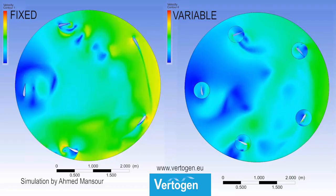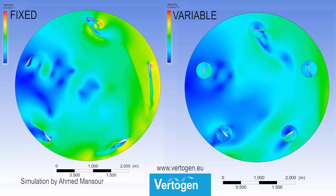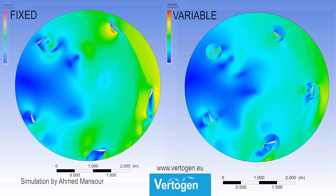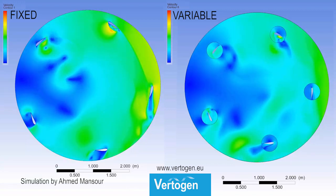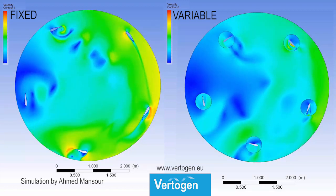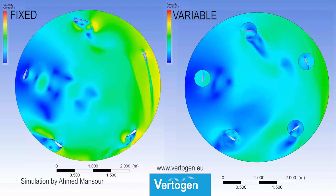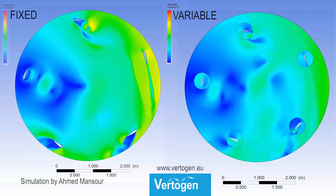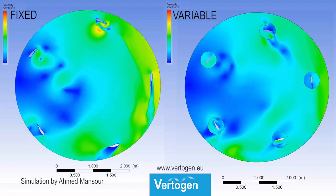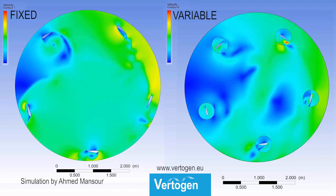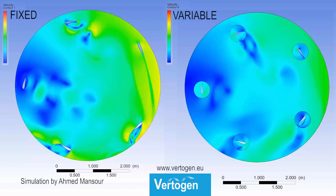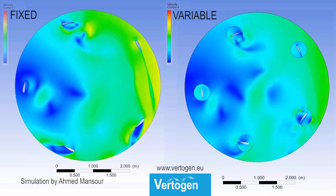The fixed blade system on the left is less efficient, as lift is created by only one or two blades meeting the wind flow at the better angle, while the remaining blades generate braking turbulence by meeting the air at a worse angle. The variable pitch system shows lift from more than two blades and less drag from the other blades, which translates into a higher level of wind energy absorption and output in the form of mechanical drive energy.